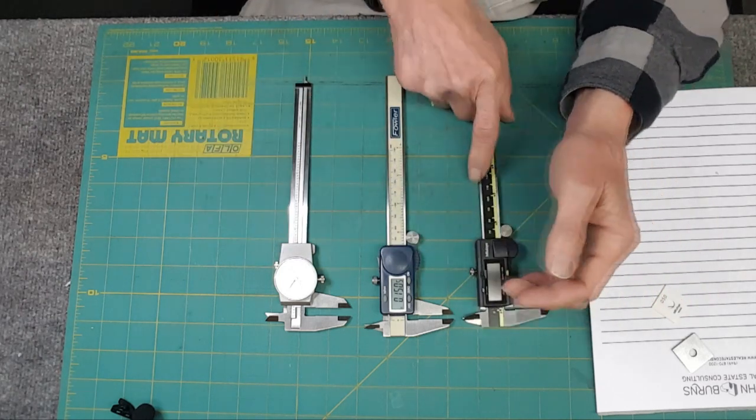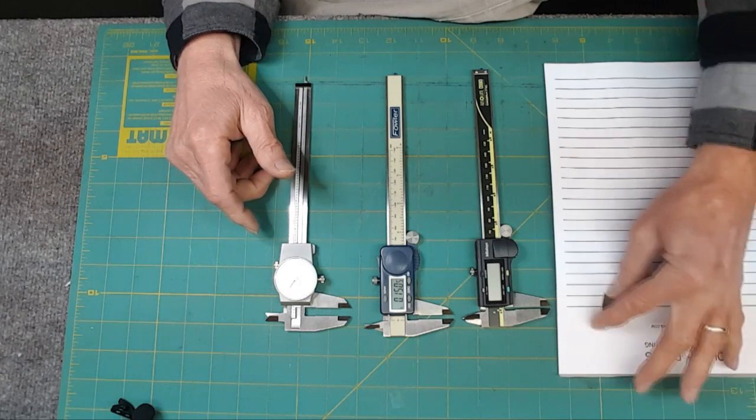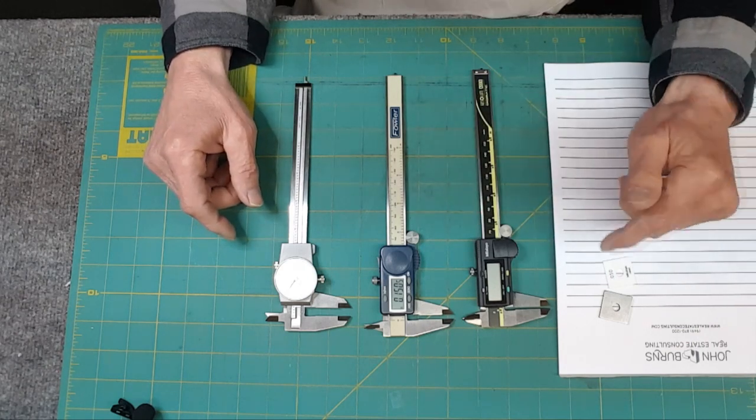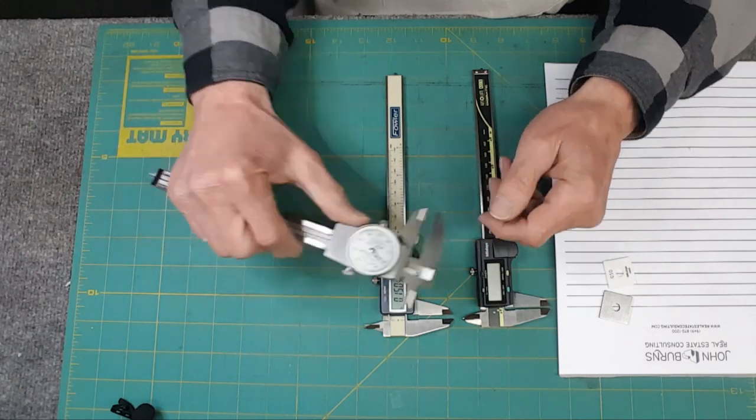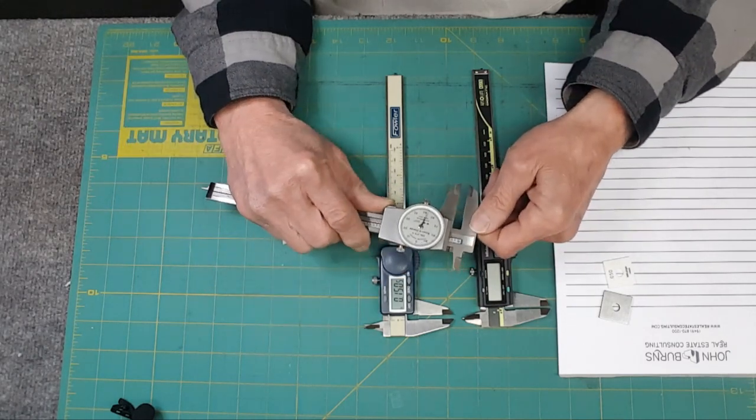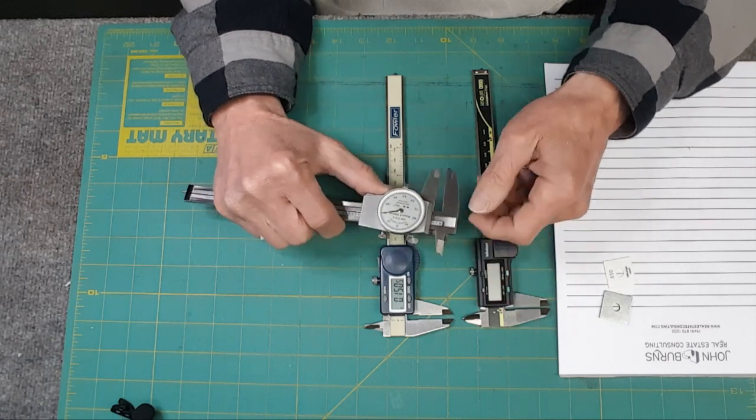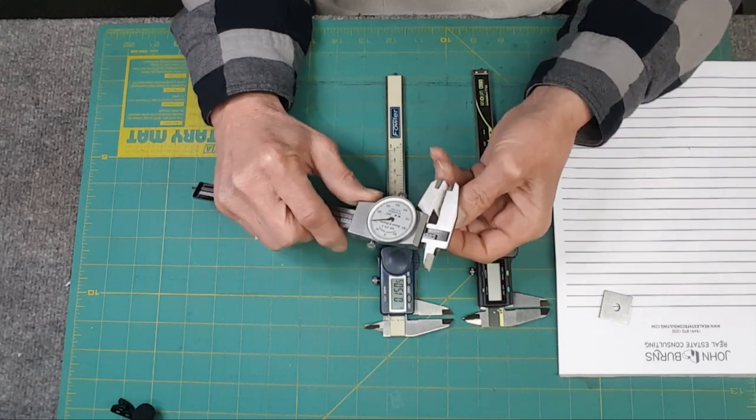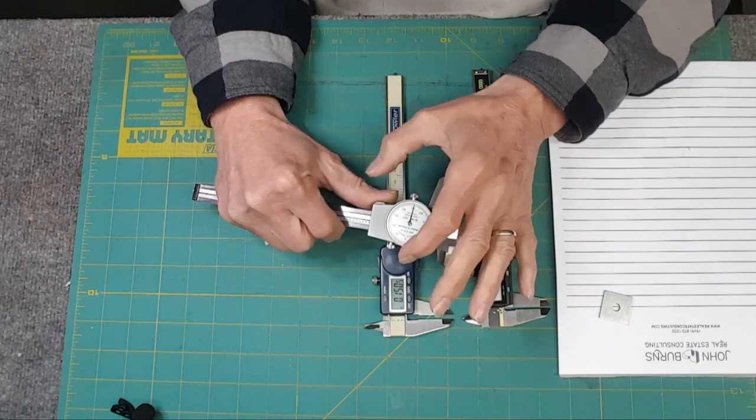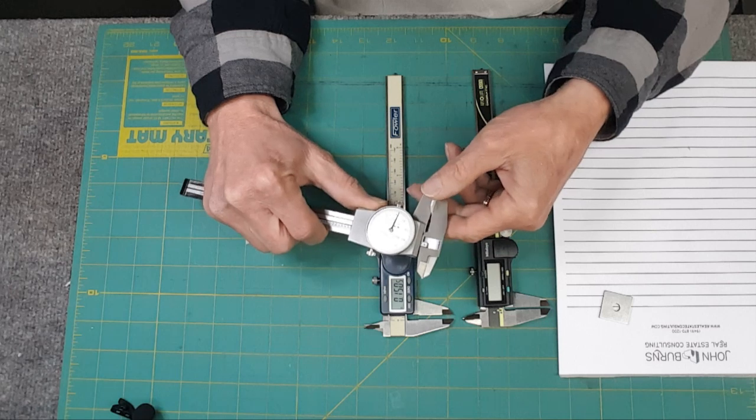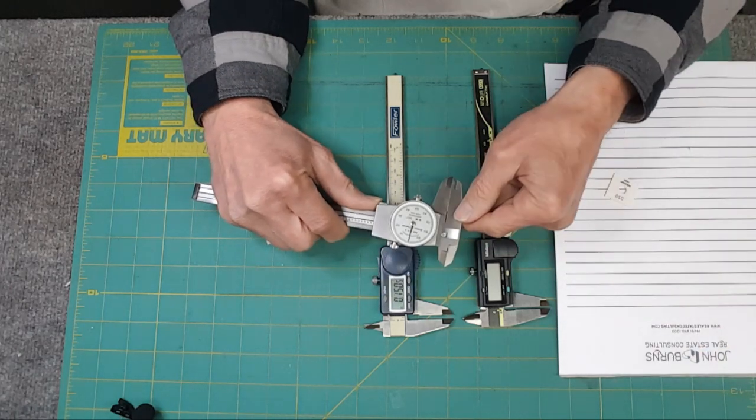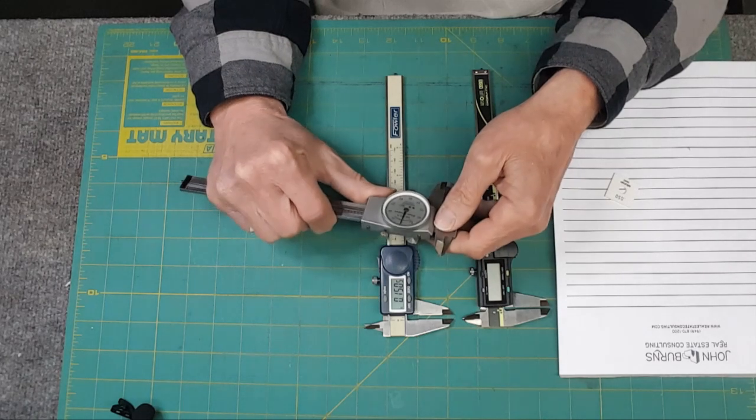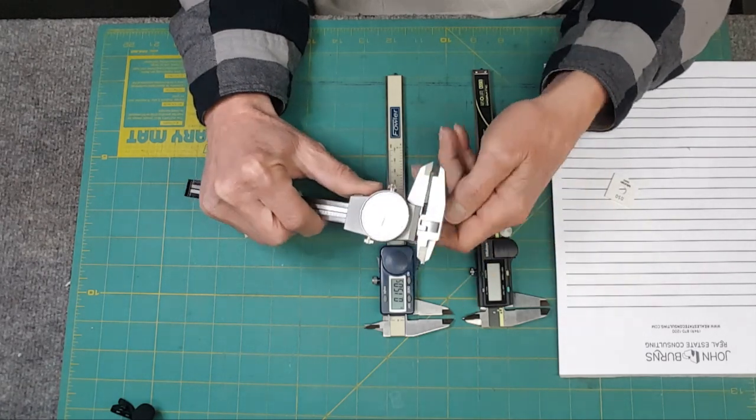Also, when you pick it up, usually they come with a certificate, and it'll tell you what the particular accuracy is of that caliper. If you really want, and I know a lot of people don't have gauge blocks, either rectangular or square, you can always buy one, and then you can calibrate whatever you have.